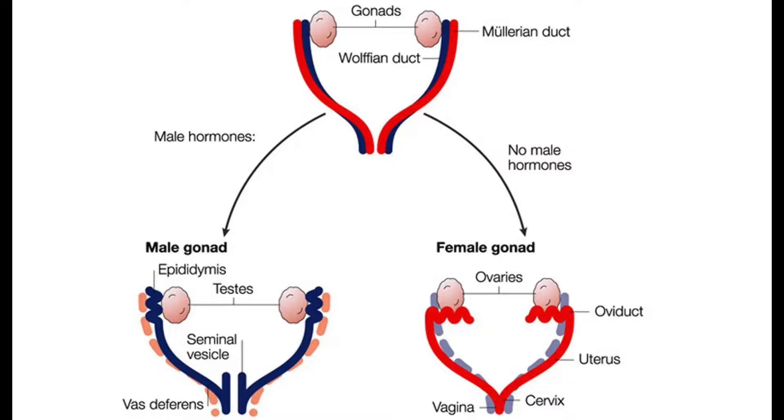For someone to develop as a typical female or typical male, all of these things need to line up perfectly without any error in the genetic material or in development. There are disorders where errors occur that cause these things not to align — for example, someone with XX chromosomes who develops a penis, or someone with XY chromosomes who develops a uterus and vagina. You're probably familiar with the concept that every embryo has the potential to develop into either a male or a female. Each embryo contains the Müllerian duct — the female duct — and the Wolffian duct — the male duct — as well as undifferentiated gonads.